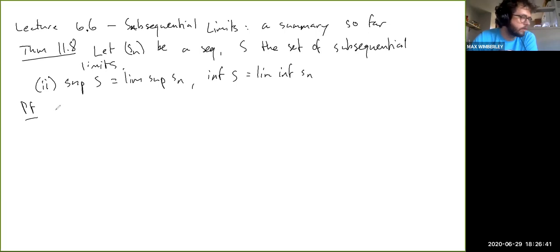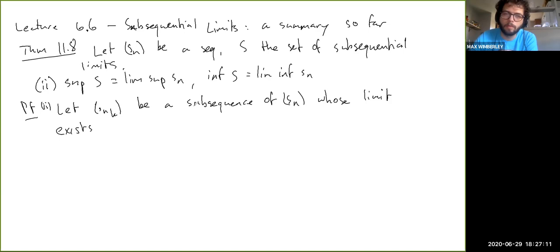So here's how this goes. So let proof of 2. Let Snk be a subsequence of Sn whose limit exists. We're only concerned - and of course, I'm being careful not to say that Snk converges, remember, because the limit can exist without it converging. But I'm not interested in subsequences whose limit doesn't exist, because I'm only interested in showing things about the elements of S. And the elements of S are the subsequential limits. So they come from subsequences whose limit exists. Here's the general strategy, I guess.